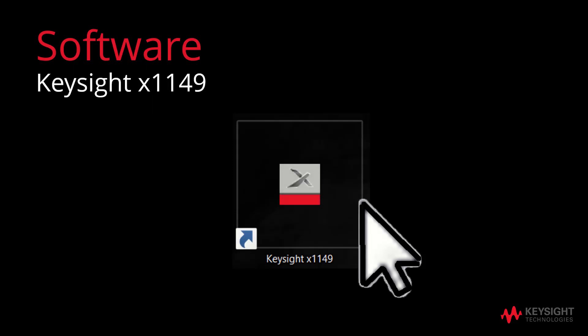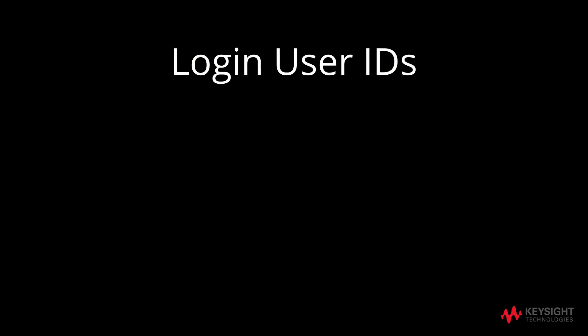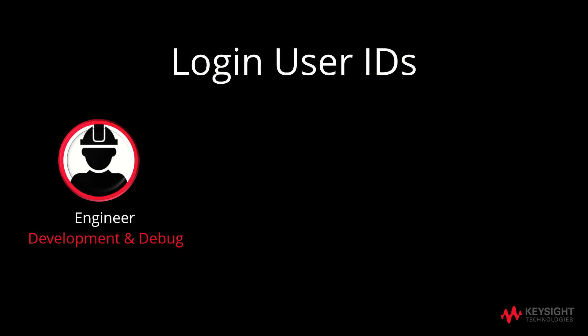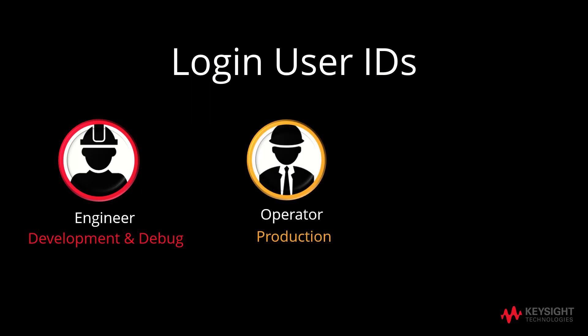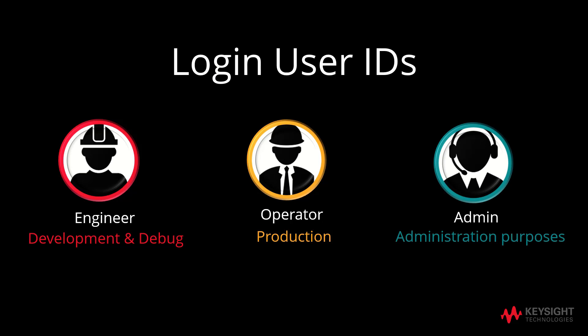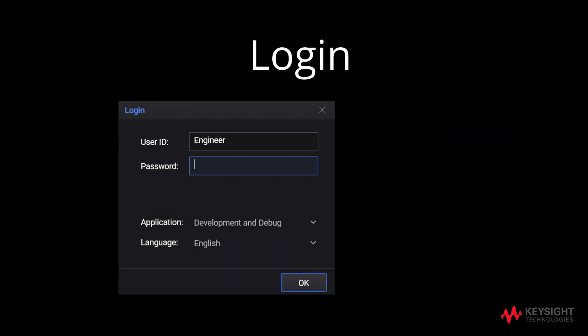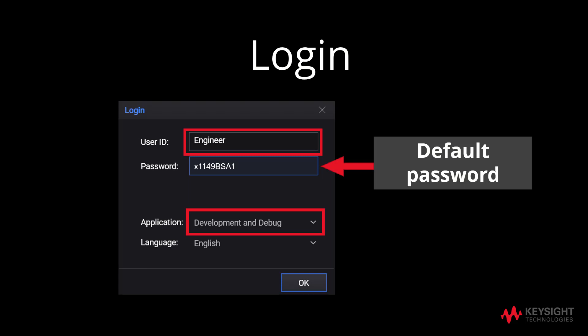Let us now explore the Keysight X1149 software. The X1149 software comes installed with three default login user IDs. The Engineer has full access to the software and is mainly in charge of development and debug. The Operator will focus on production and has access to launch and run test programs. The Admin can create additional logins and set their privileges for administration purposes. To log in as Engineer, select Development and Debug Application. For first-time users, the default password for Engineer is X1149-BSA1. The software will then prompt you for a change in password. Once the password is changed, you need to re-login with the new password.